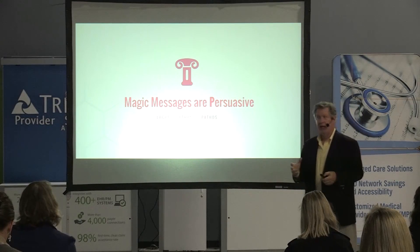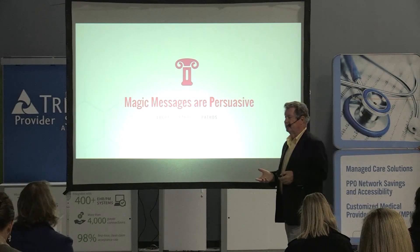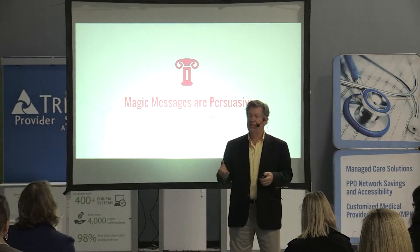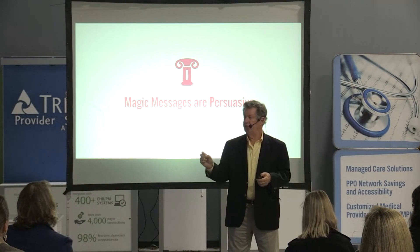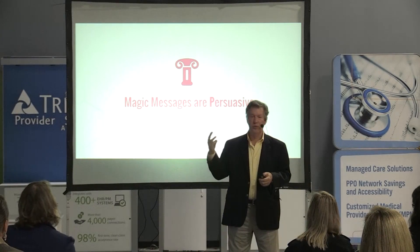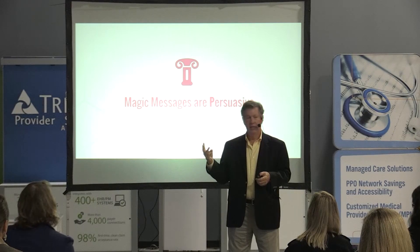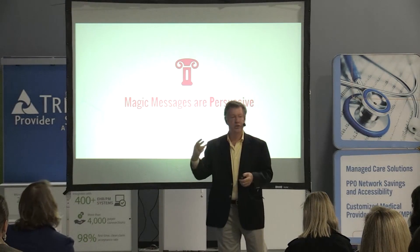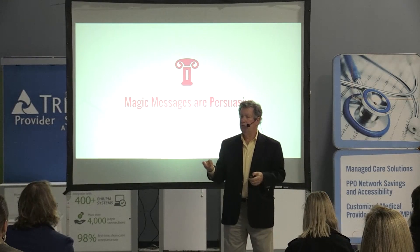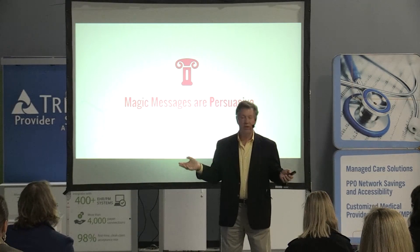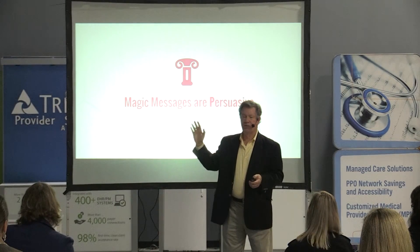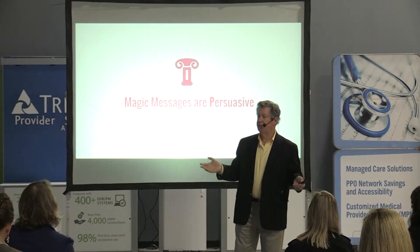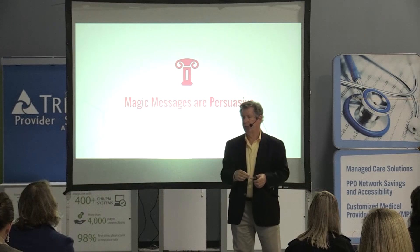Persuasion, Aristotle determined back then, really was based on the ability to appeal to an individual on three different levels. And if you could appeal to them on these three levels, your chance of getting them to do your bidding was extremely high. And the more you were able to appeal on each of these three levels, the more likely it was that you could get the outcome that you were looking for.